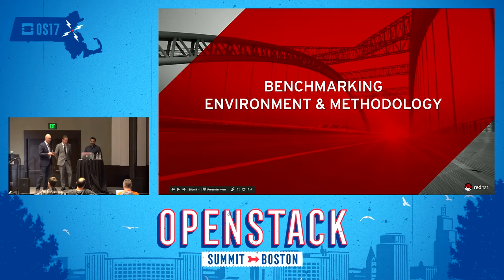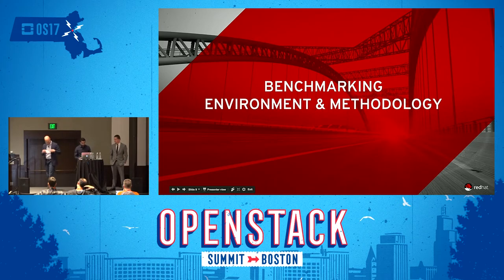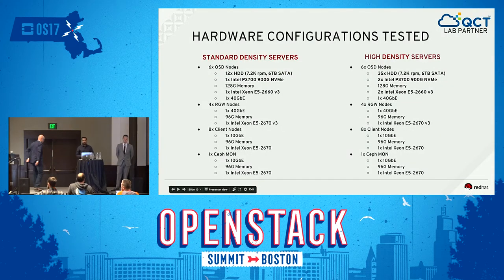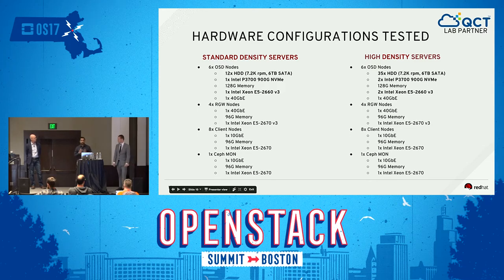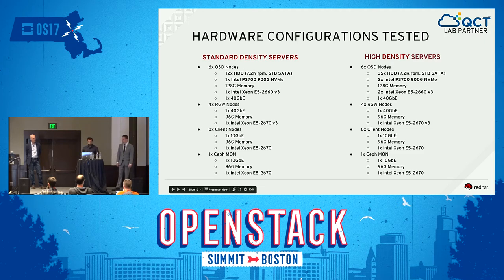Karan, can you tell us a little about the benchmarking environment and methodology? Sure. We tested a couple of different configurations: standard density servers and high density servers. On standard density, we had 12 spinners backed by a single NVMe Intel P3700 for journaling and one single 40-gig Ethernet. On high density, we have 35 spinners at 7.2K, backed by two P3700s for journaling. RGW hosts, number of clients, and monitor machines were typically the same.